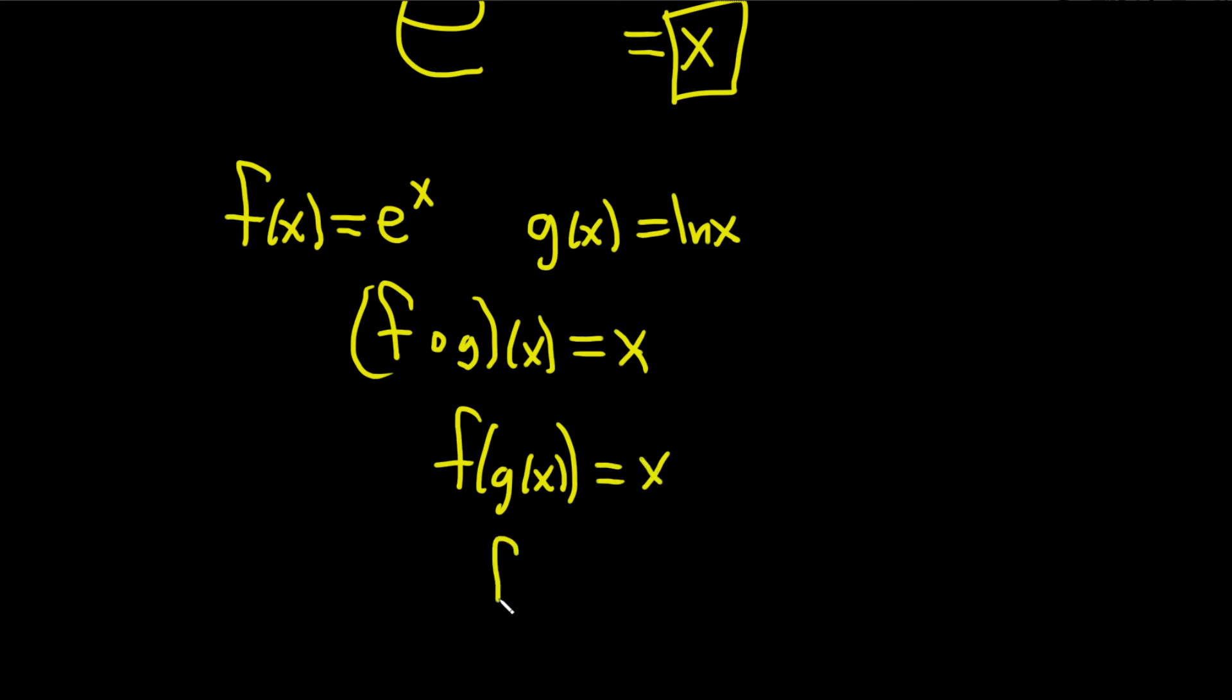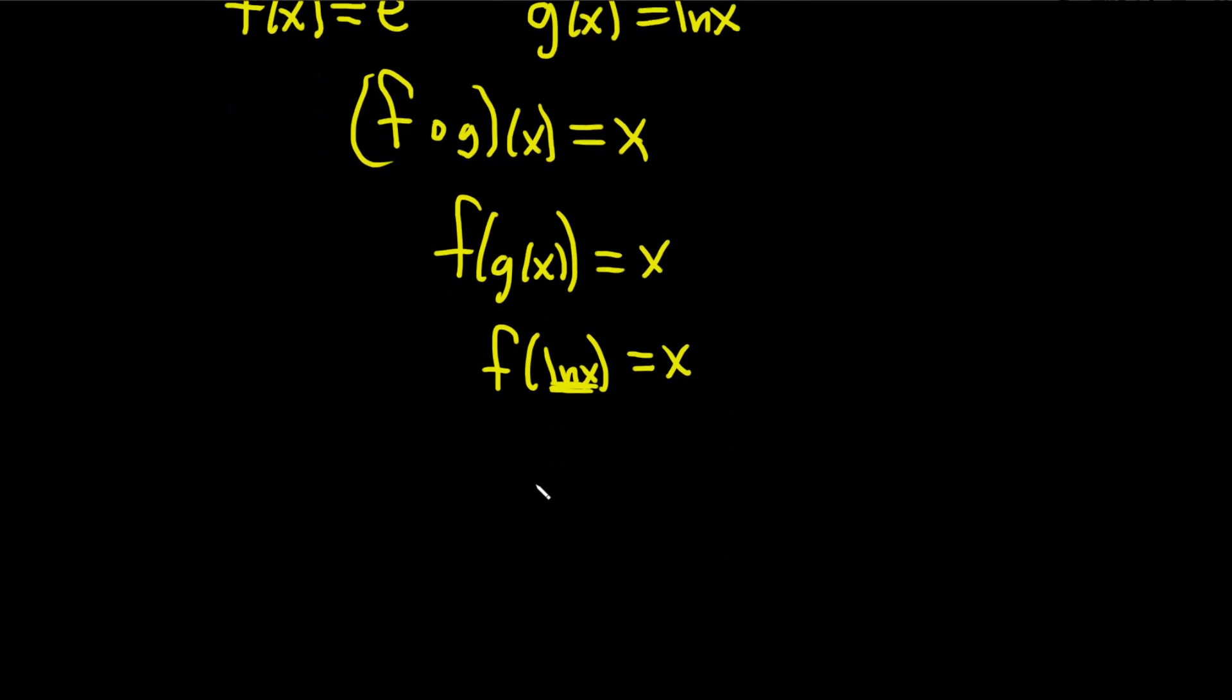So that's the same thing as f of ln x, and that's equal to x. f of x is e to the x. It's right here. So f of ln x means you basically just take the ln x and you replace it with your x. So that will give you e to the ln x equals x.